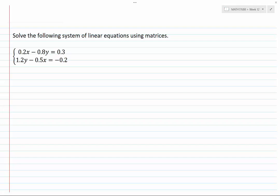Solve the following system of linear equations using matrices: 0.2x minus 0.8y equals 0.3, and 1.2y minus 0.5x equals minus 0.2. I realize that the orderings of x and y are different in the two equations, so rearrange the second equation in such a way that the x term comes first, such as in the first equation.